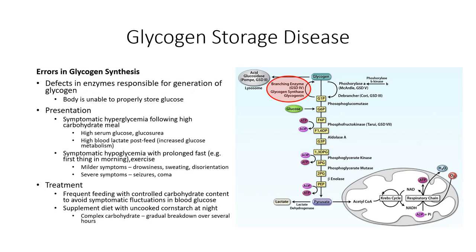We'll start our exploration of glycogen storage diseases with a look at errors in glycogen synthesis. This would include any of the enzymes involved in the synthesis of glycogen from individual glucose monomers, or in modification of the glycogen chain. As a result, the body is not able to maintain effective stores of glucose for use in the post-absorptive state. Patients have similar symptoms to that seen in diabetes, with hyperglycemia and glucosuria following a high sugar meal.